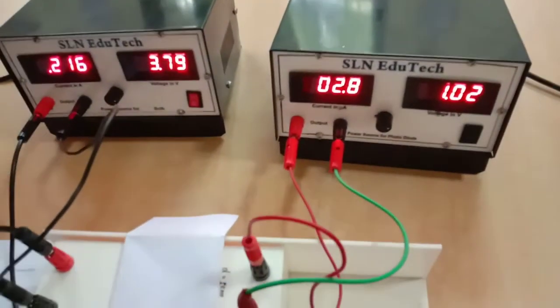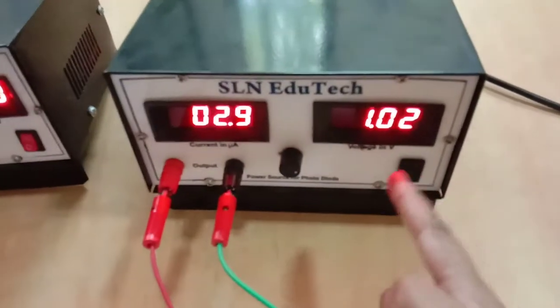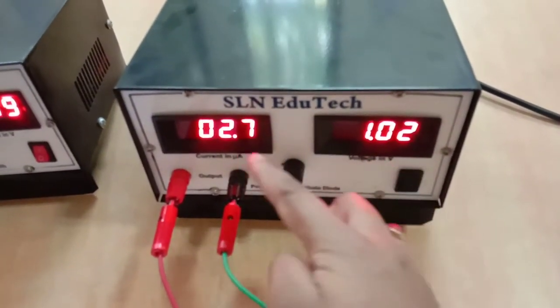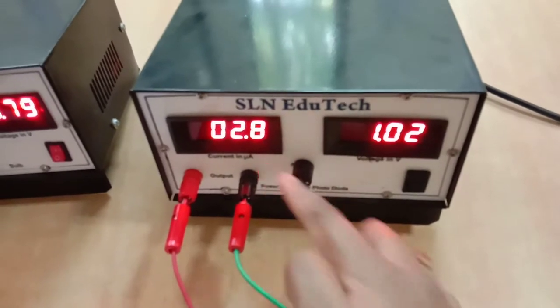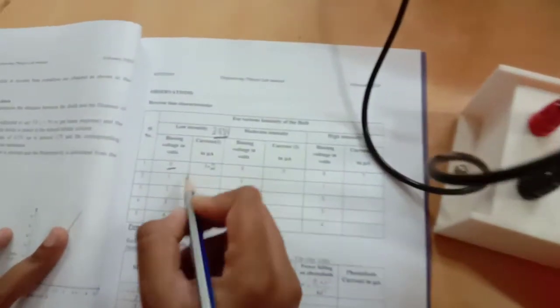Okay, now you can observe the voltage, that's the biasing voltage, which is 1.02. For that, what is the current we are getting? It's 2.8 or 2.7, any one of the values you can use. So let us write the higher value, 2.9.